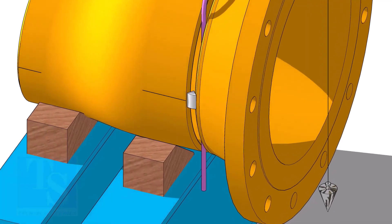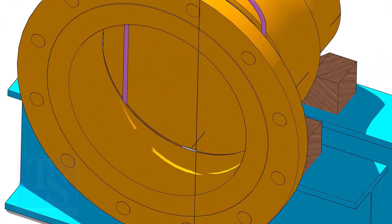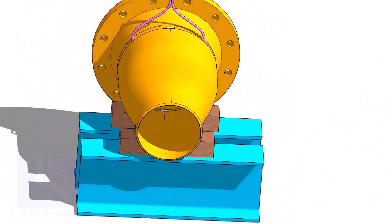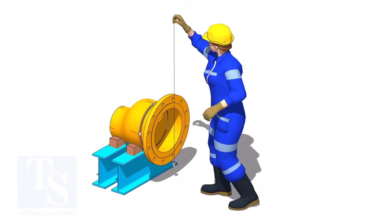If the gap is correct, tack weld on sides. Check the vertical and hole plumbness.